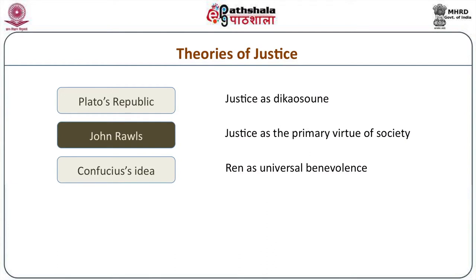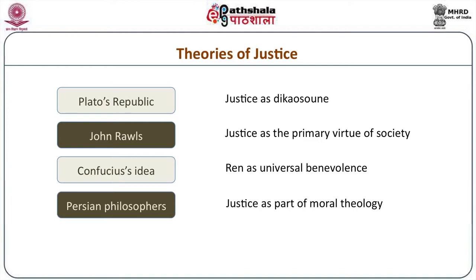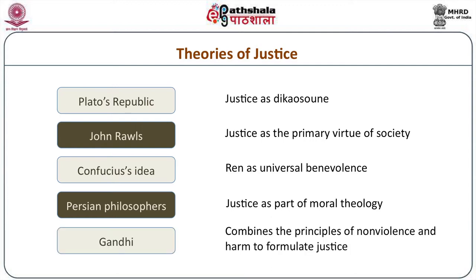Throughout ancient oriental philosophy, other conceptions of justice were suggested. For example, Confucius has an idea referred to as ren, consisting of justice as universal benevolence leading to an overall societal harmony. Persian philosophers and other Muslim political and legal theorists, including Avicenna and Averroes, have also offered various discussions of justice in relation to moral theology and other political theological conceptions. Gandhi combines the principle of non-violence and the prohibition against doing harm to come up with a theory of justice. He states that justice demands that no harm be done.